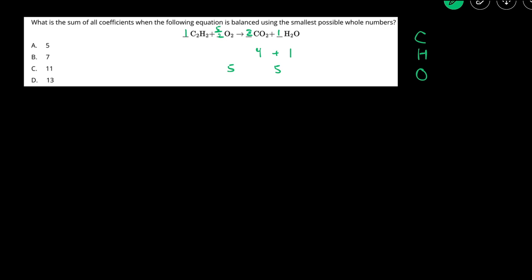But then we have to get whole numbers. So after that, we just multiply everything by two. So this becomes two, this becomes five, this becomes four, and then this becomes two.